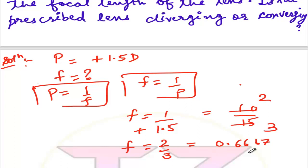F equals approximately 0.67 meters - this is our focal length and our answer. Now the question asks: is the prescribed lens diverging or converging? When the focal length is positive, the lens is converging, which means it's a convex lens.